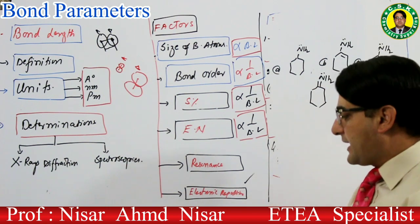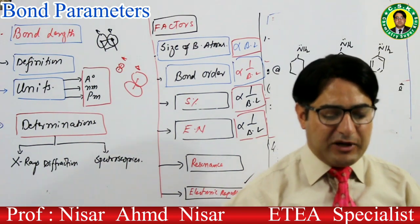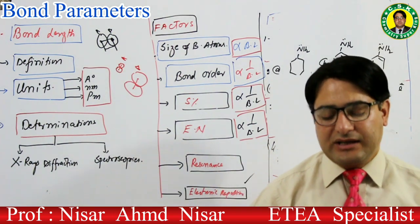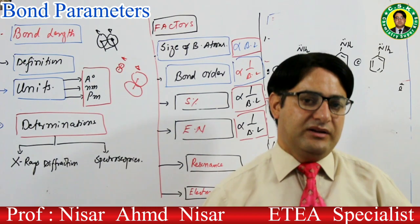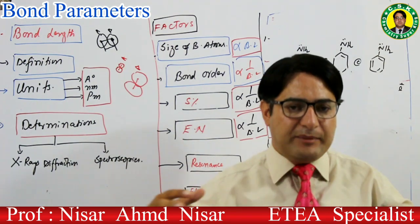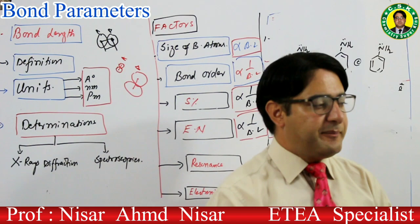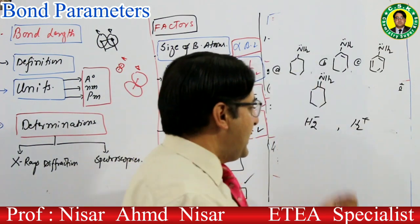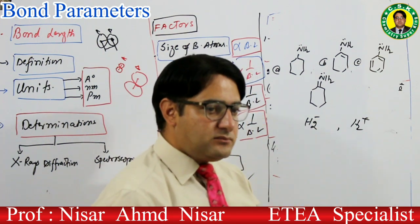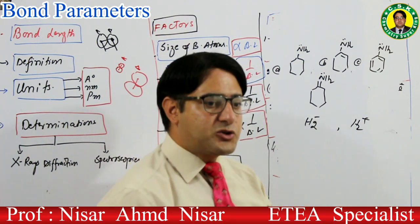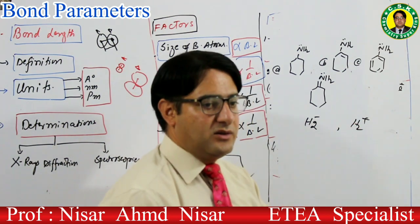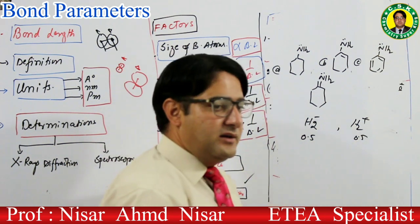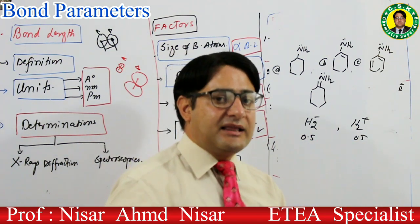Next factor: electronic repulsion۔ مثال: H2⁻ اور H2⁺۔ H2⁻ میں تین electrons ہیں، H2⁺ میں ایک electron ہے — دونوں کا bond order 0.5 ہے۔